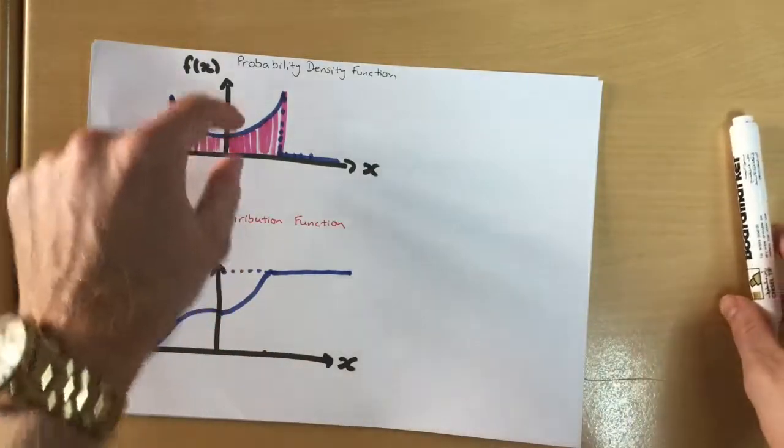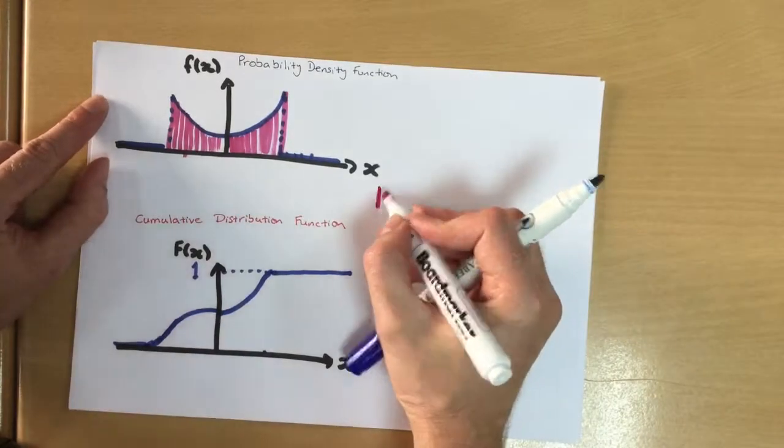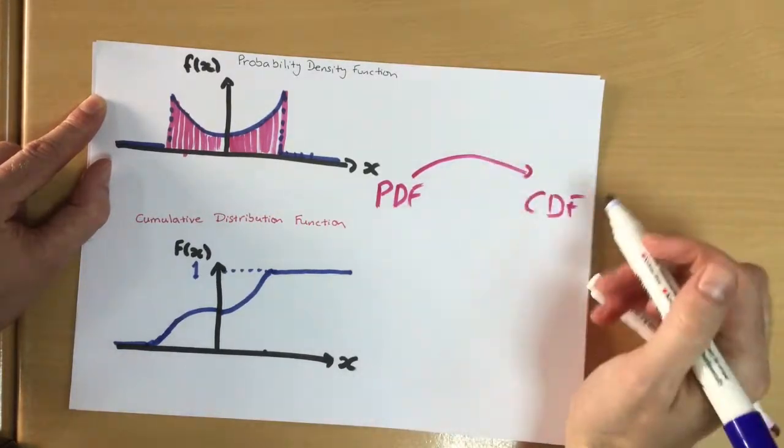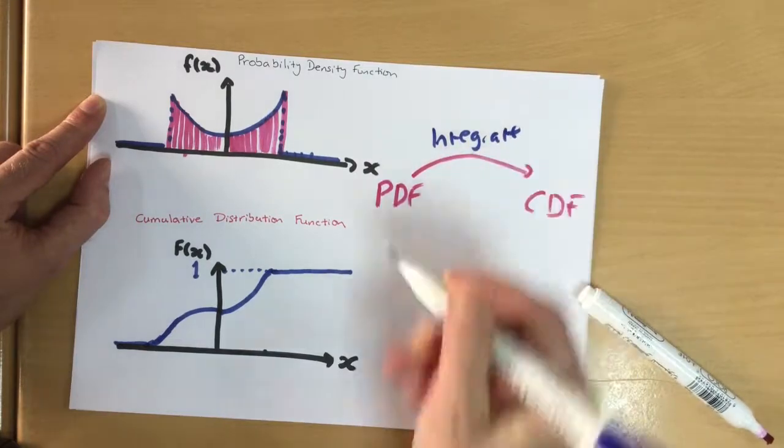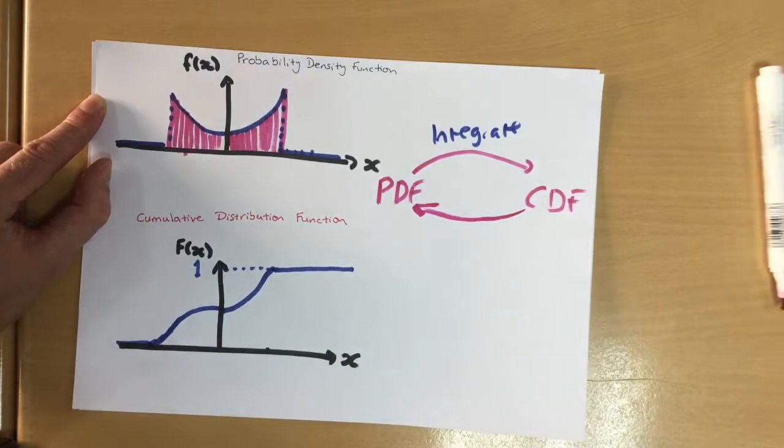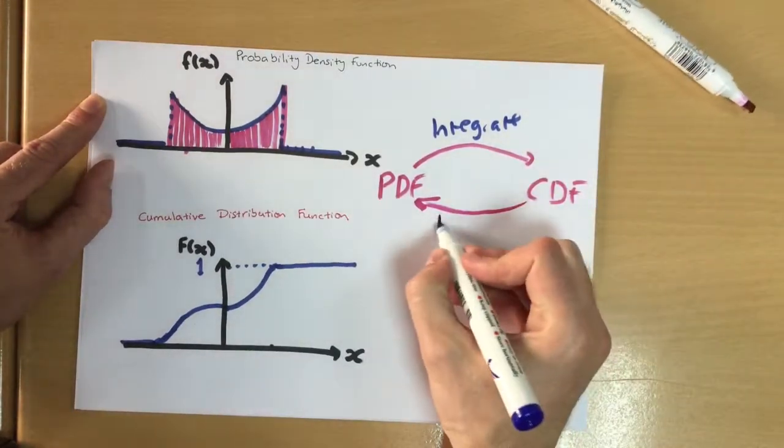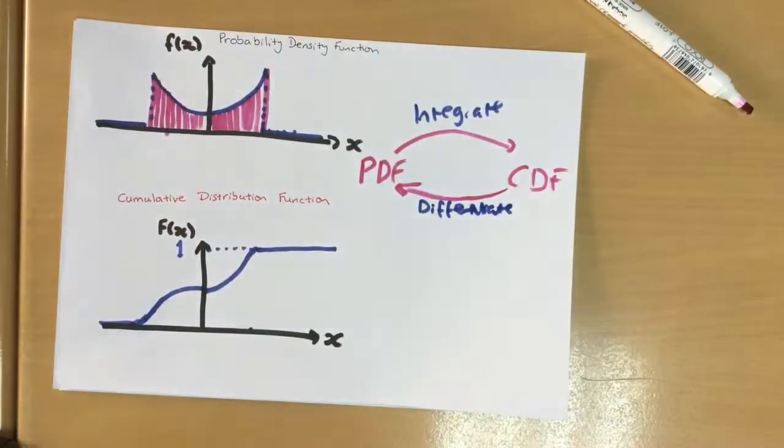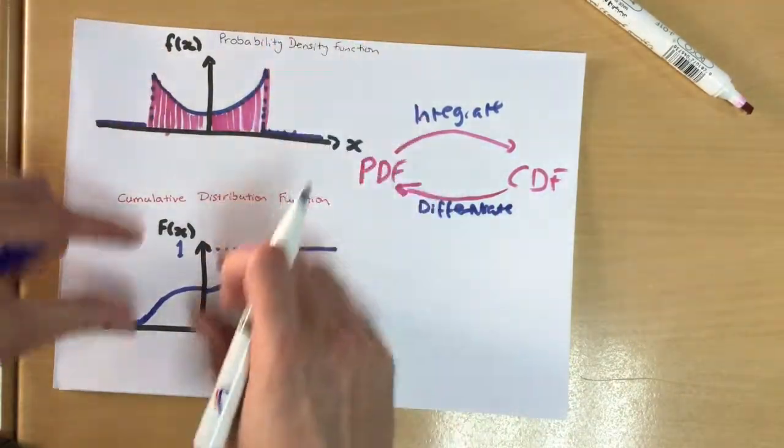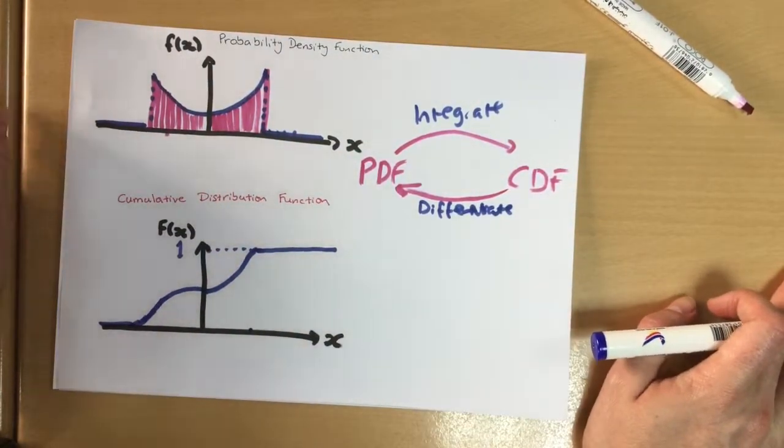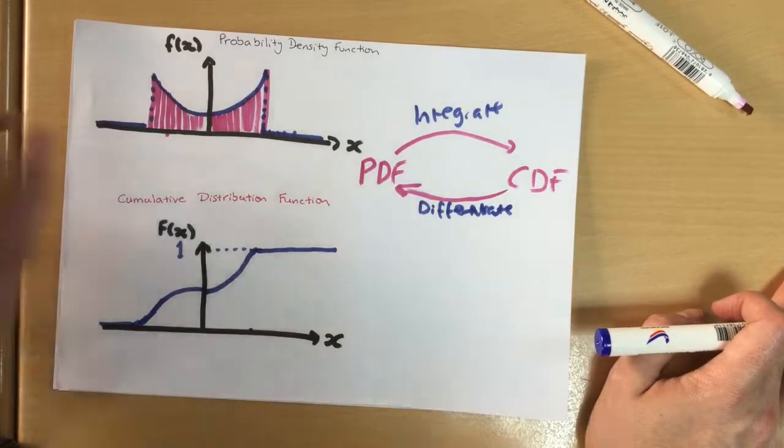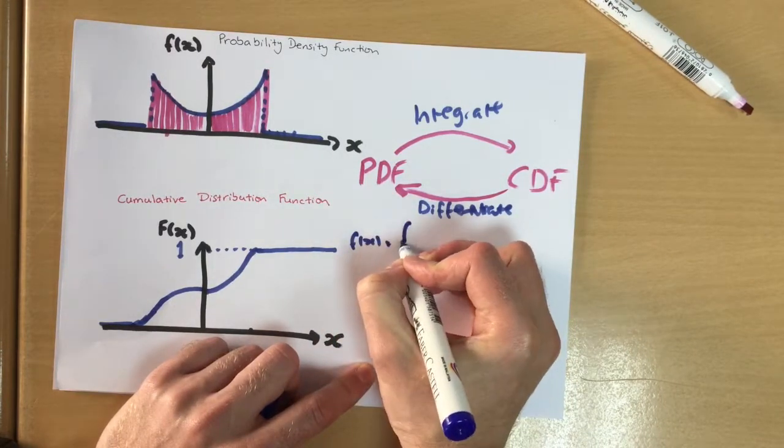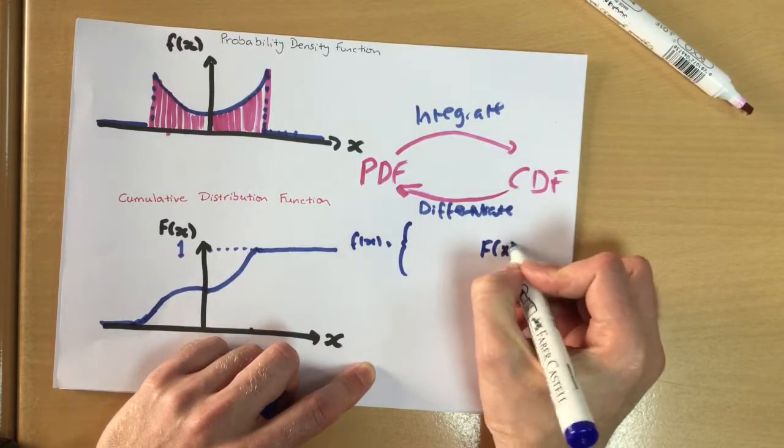OK. So to get from this graph to this graph, to get from our PDF to our CDF, we have to integrate our function. To get back again, well, as you know from your previous units, the opposite of integration is to differentiate, to go back from our CDF to our PDF. And in the later videos, we'll look at how to actually do this process of integrating. There's a few tricks to it that make it a bit different. Just for this video, we need to know we start with our PDF function, and we integrate it to get to our cumulative function.